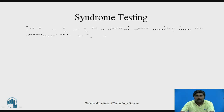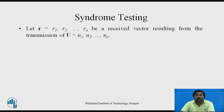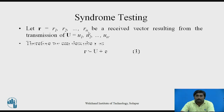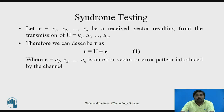Now, what is syndrome testing? R is the received vector at the receiver side, generated by transmitting codeword U. You transmitted U (U1, U2, …, Un) and at the receiver side you receive R (R1, R2, …, Rn). Because of the channel, some error may be added, so the received vector R equals U plus E, where U is your codeword and E is the error vector (E1, …, En) generated by the channel.